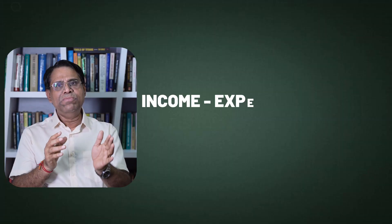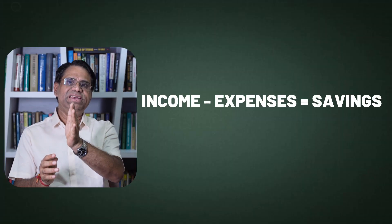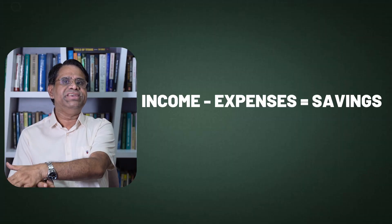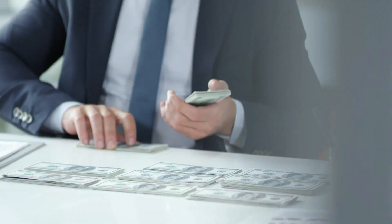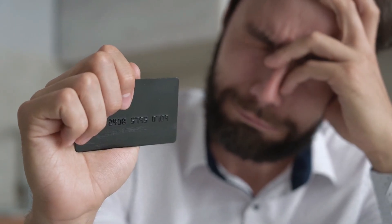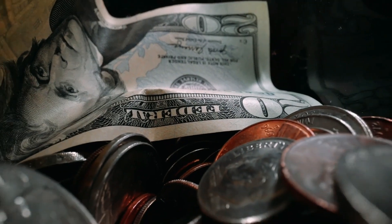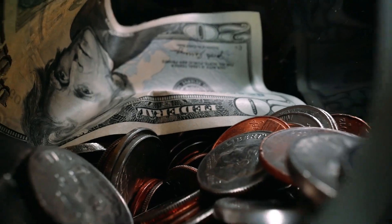The next equation, a little better than the first two, is: income minus expense is equal to saving. This means you earn, you spend, and if something is left over, then you save it.